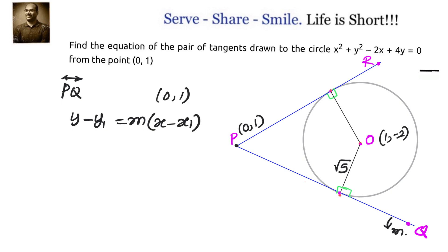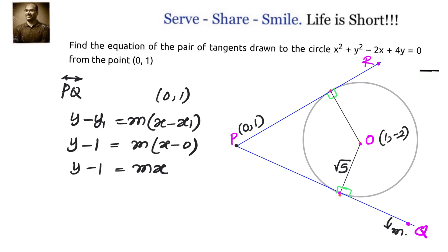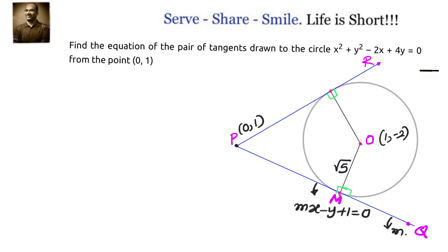First, let us get the equation of PQ. We are using the point-slope form: y - y₁ = m(x - x₁), where (x₁, y₁) is a point and m is the slope. Here, slope is m and the point is (0, 1). So, y - 1 = m(x - 0), which simplifies to mx - y + 1 = 0.